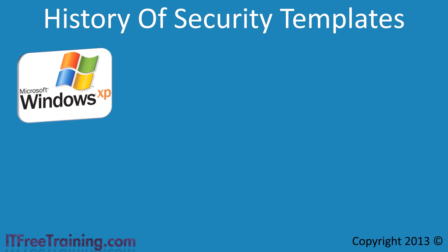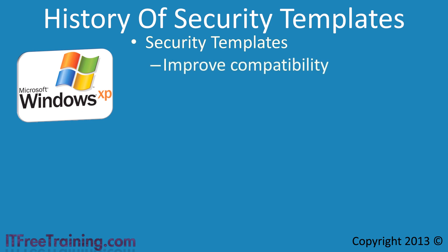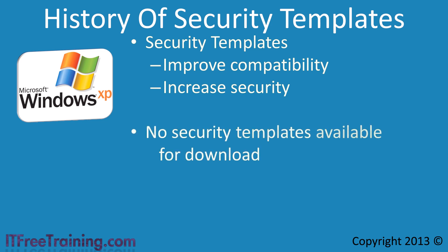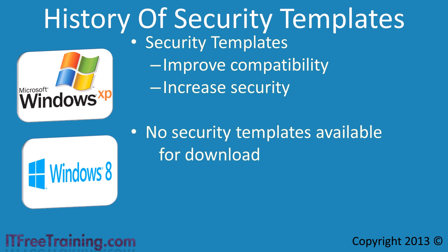If you have been working with computers since Windows XP, you may remember there being a security template that could be applied to Windows XP. This security template changed the local security settings on Windows XP to make it more like Windows 2000. These changes were required in some cases to get old software to run. You could also get other security templates which could be applied to strengthen the security of the computer. Microsoft does not release security templates like these for modern operating systems, as the need for these has been replaced by other tools.